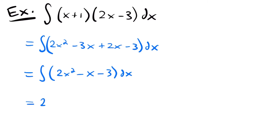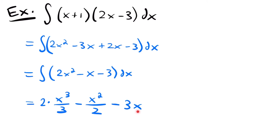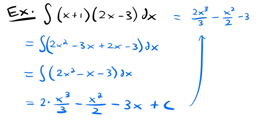Taking the integral, this is equal to 2 times x to the third power divided by 3 — we added 1 to our exponent to get 3 and divided by 3 — minus the integral of x. Our power is 1, so we add 1 to get x to the second power divided by 2. Then we subtract 3x, since the integral of a constant is just that constant multiplied by x. Don't forget your plus c. Simplified: 2x cubed divided by 3 minus x squared divided by 2 minus 3x plus c.